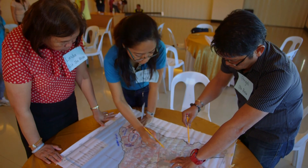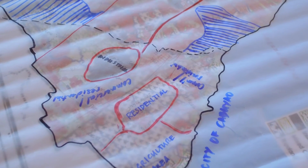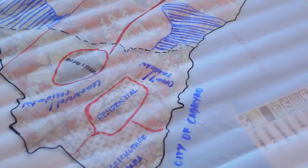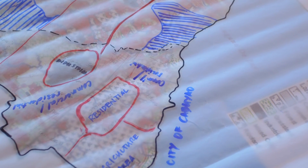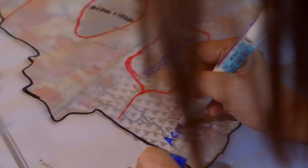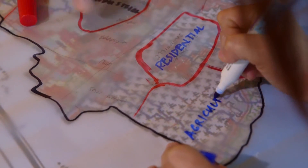The city officials identify the areas that will be converted into residential or industrial areas as well as those that will remain as forested, agricultural, or grassland areas.